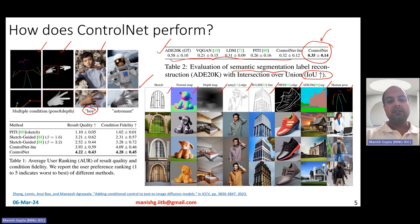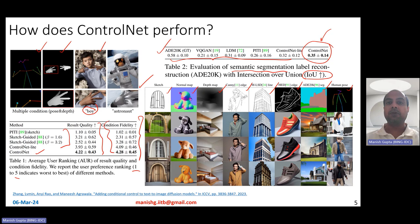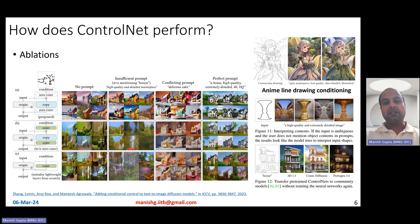They also did human evaluation experiments. They took several different algorithms including ControlNet and asked humans to rate, on a scale of one to five, how good the quality of the result is. They also asked people to rate the condition fidelity — how well the output resonates with the supplied conditioning image. They found ControlNet to perform much better.